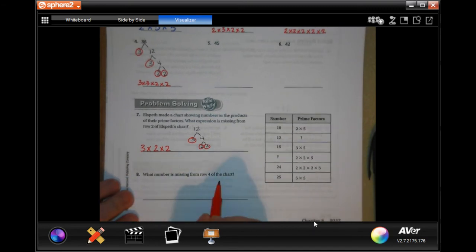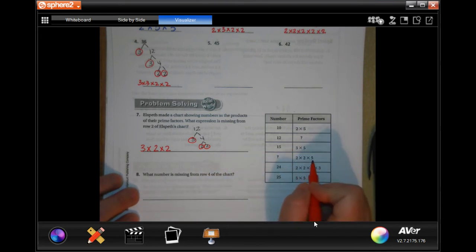What number is missing from row four of the chart? So, five times two is ten. Times two is twenty. When it's giving you one of these that's missing, then you just multiply the numbers that it tells you. And when it's giving you one of these that's missing, you just split it up. Divide it up.